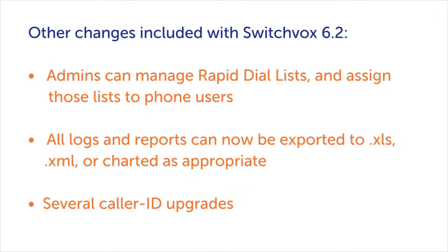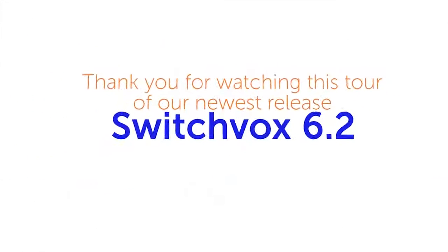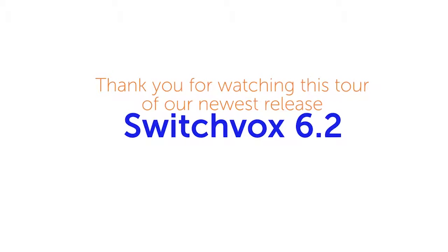Here's a list of the other changes with Switchvox 6.2. Admins can manage rapid dial lists and assign those lists to phone users. All logs and reports can now be exported to XLS, XML, or charted as appropriate, as well as several caller ID upgrades. Thank you for watching this tour of our newest release, Switchvox 6.2.